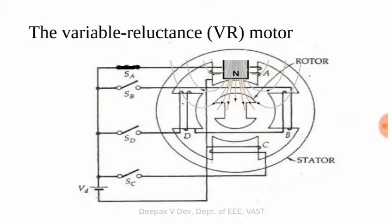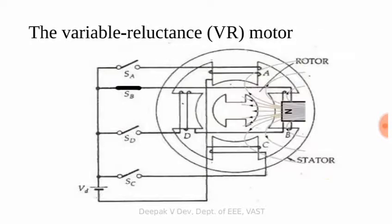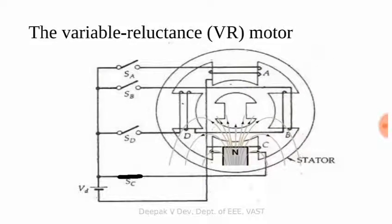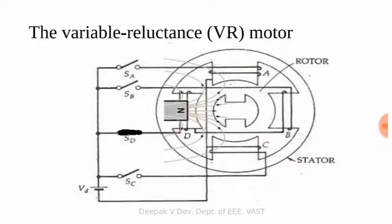Here, winding A is excited, then winding B is excited — this is the excitation sequence. The rotor rotates in the clockwise direction with each step of 90 degrees.